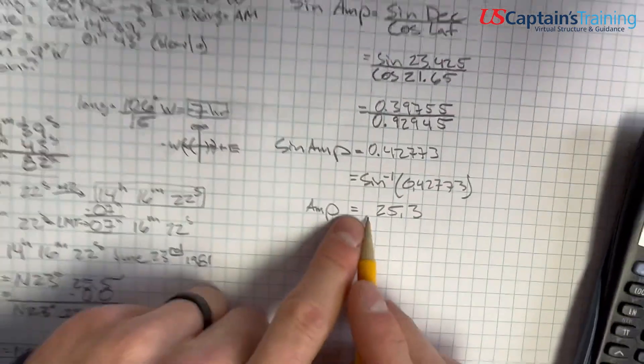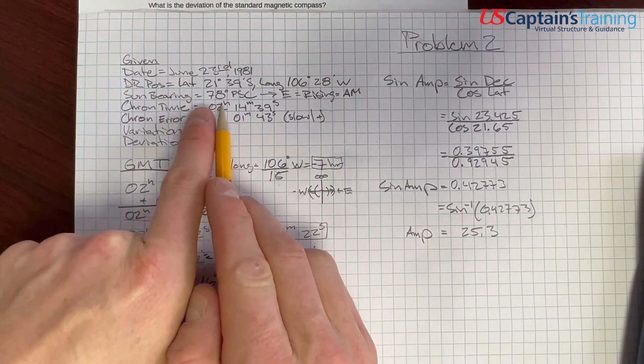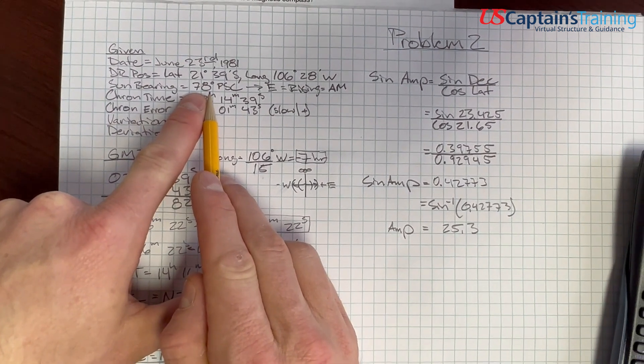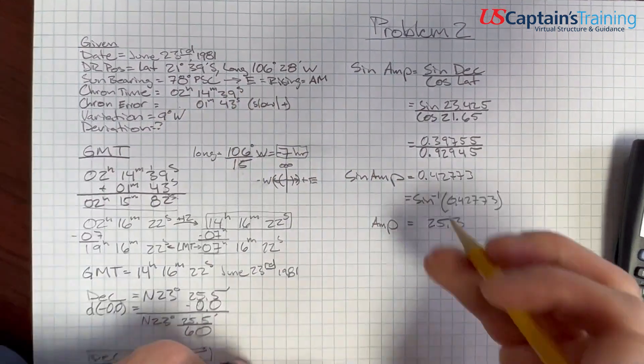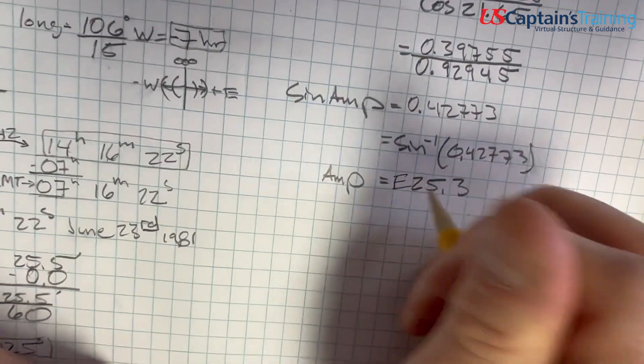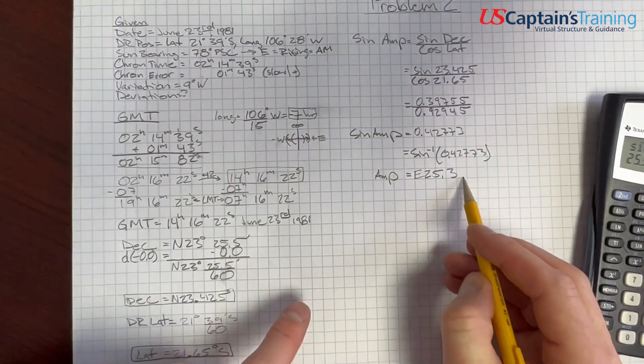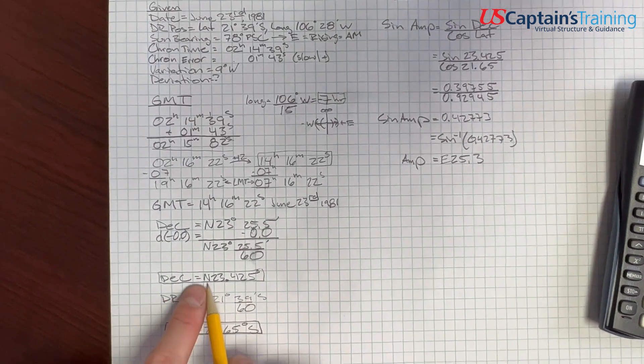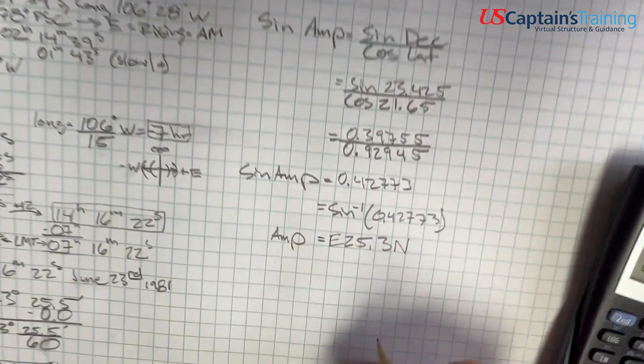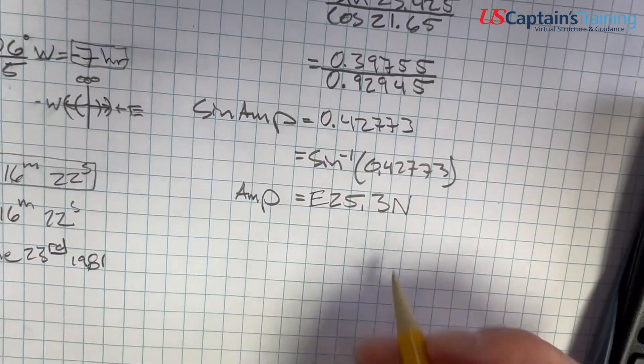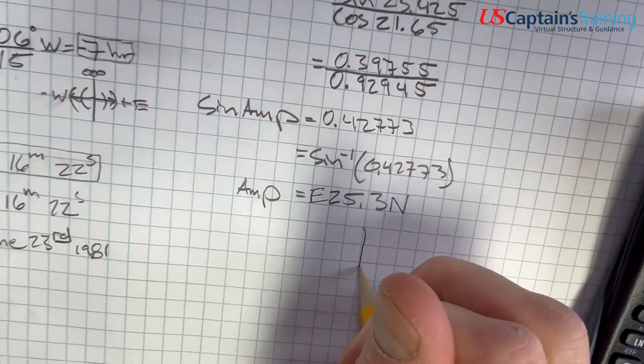And now we need to name it. In the front, we're going to get east or west, and that's decided by the bearing of the sun. Right here, we said it was 78, which is in the east, and it was rising AM, so we name it east. And if it's north or south comes from the name of the declination, which in this case is north. So we're east 25.3 degrees north.